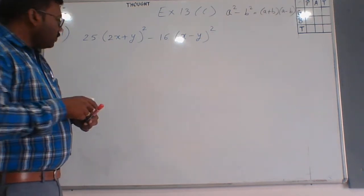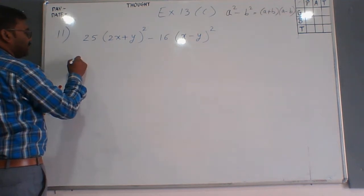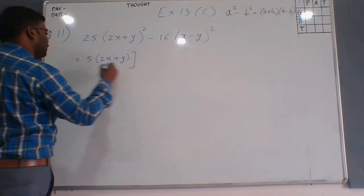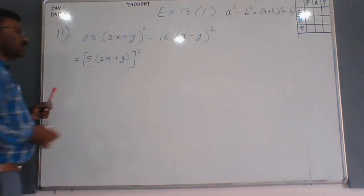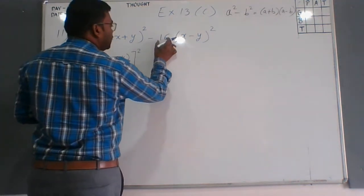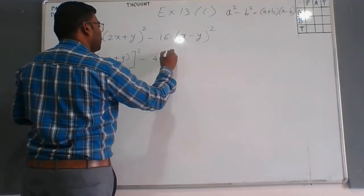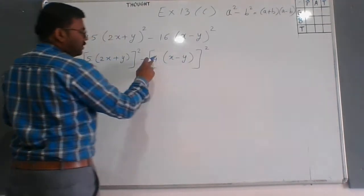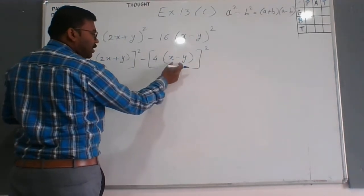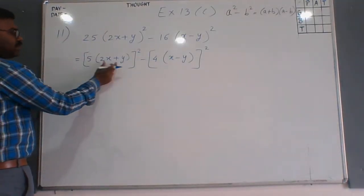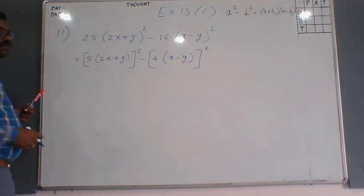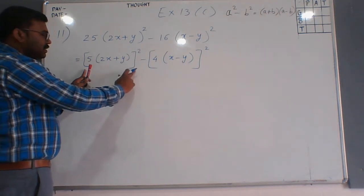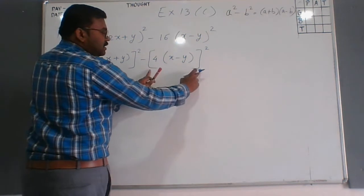Now, 25 is a square of 5, so we can write the first term as (5(2x+y))². Similarly, 16 is a square of 4, so the second term becomes (4(x-y))². This square is common for 5 and the bracket, and similarly for 4 and its bracket. This complete bracket is considered as a, and this is b.